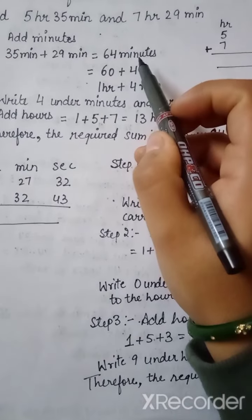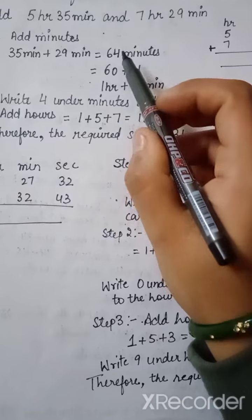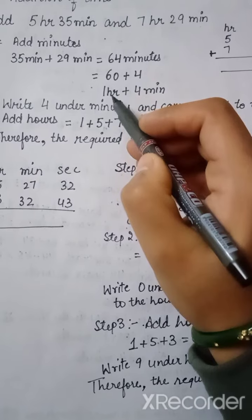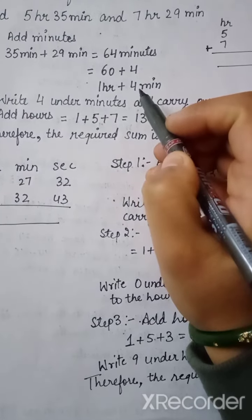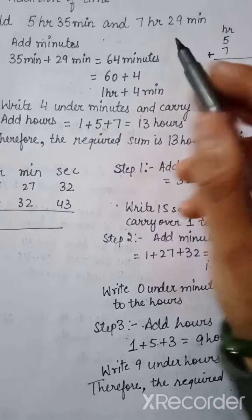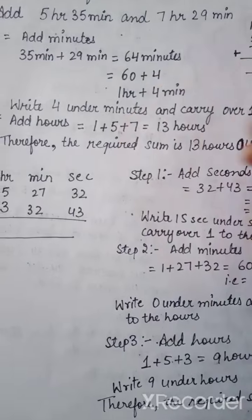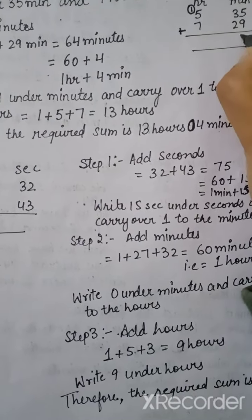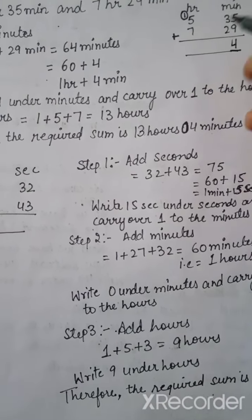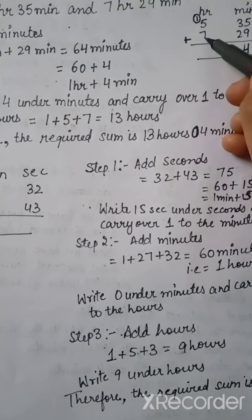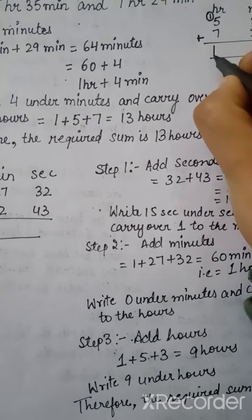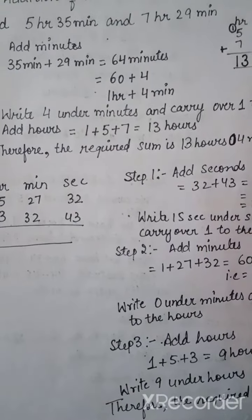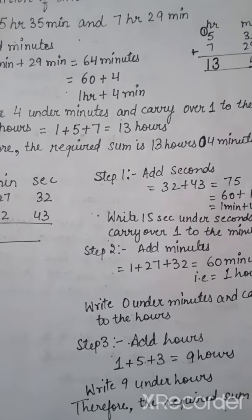35 minutes plus 29 minutes, when we add it we get 64 minutes. As you all know, one hour is equal to 60 minutes, so we write it as 60 plus 4. 60 minutes is one hour, and the remaining 4 minutes we carry the 1 hour to the hours column and write 4 under the minutes column. Now add hours: 5 plus 7 is 12, plus 1 carried over is 13. So the answer is 13 hours 4 minutes.